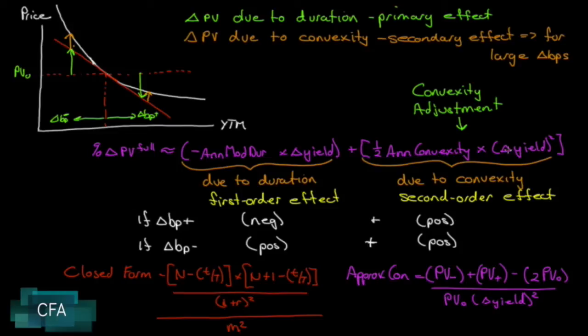One half the annual convexity times the change in yield squared. Now if you are familiar with how this would have been arrived at with calculus, you'll notice that this right here is the first derivative of this curve, whereas this is the second derivative which gives us the rate of change along the curve.